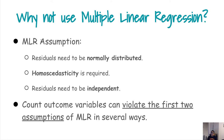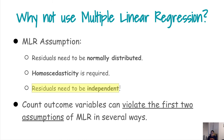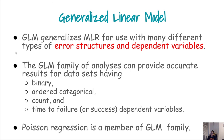There are two things we need to understand related to the assumptions of multiple linear regression. The first assumption is that residuals need to be normally distributed; homoscedasticity is a requirement; and residuals need to be independent. For count outcomes such as zero, one, two, three, four, the first two assumptions will be violated — the count data may not be normally distributed, and heteroscedasticity is a problem we'll see by example. So we need to look for something more appropriate.